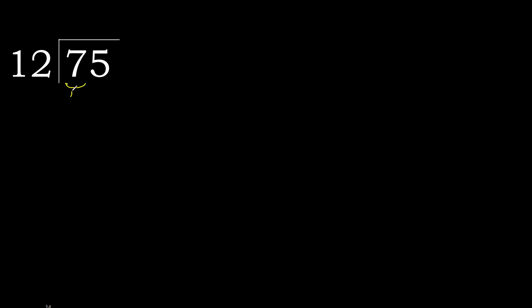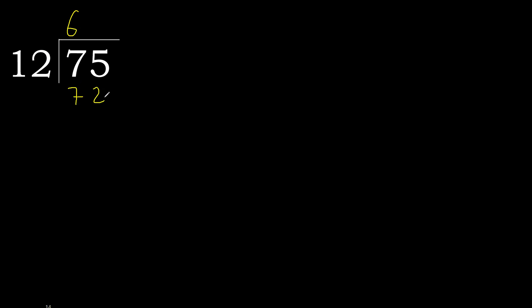75 divided by 12. 7 is less, therefore next. 75 is not less, therefore with 75: 12 multiplied by which number is nearest to 75 but not greater? 12 multiplied by 7 is greater. 12 multiplied by 6 is 72 — 72 is not greater. Subtract: 3. Next.